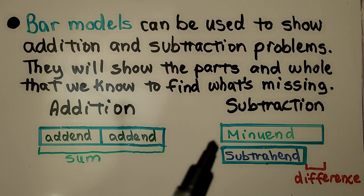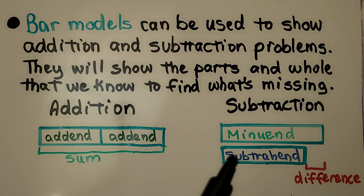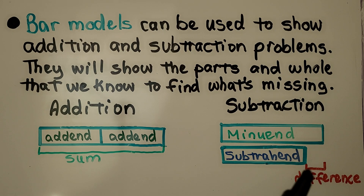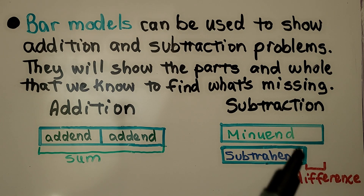For subtraction, we have two bars. We have a minuend and a subtrahend, and the difference is shown by a little bracket to show the difference between the lengths of the two bars and what's missing.